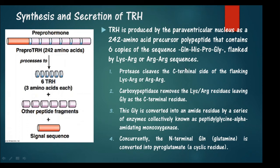The precursor polypeptide contains six copies of the sequence glutamine-histidine-proline-glycine, flanked by lysine-arginine or arginine-arginine sequences. It is released as a pre-prohormone and cleaved by proteases at the C-terminal side of the flanking lysine-arginine residues. Carboxypeptidase then removes these residues, leaving glycine as the C-terminal residue.